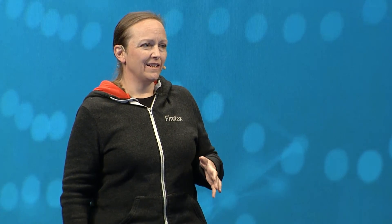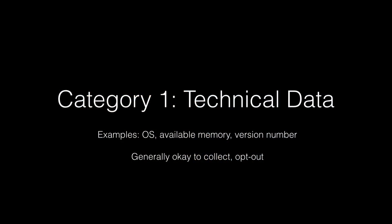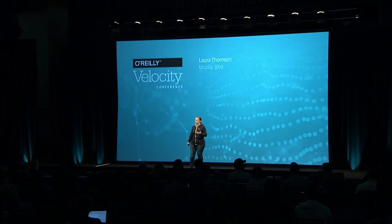The first set of things is technical data. Nobody in this room is going to argue that it's kind of important to know things like what version of the software are users running, what operating system do they have, how much memory do they have on their machine. This is opt-out — you can actually turn off us collecting this data — but it's generally not very contentious.